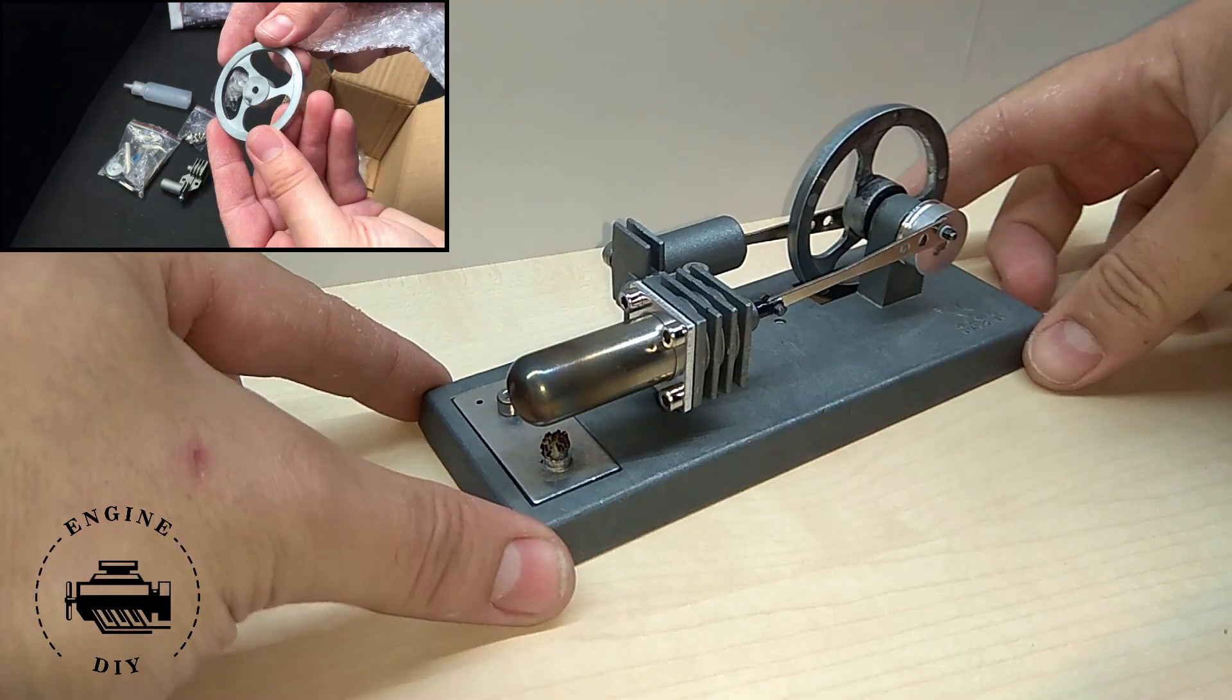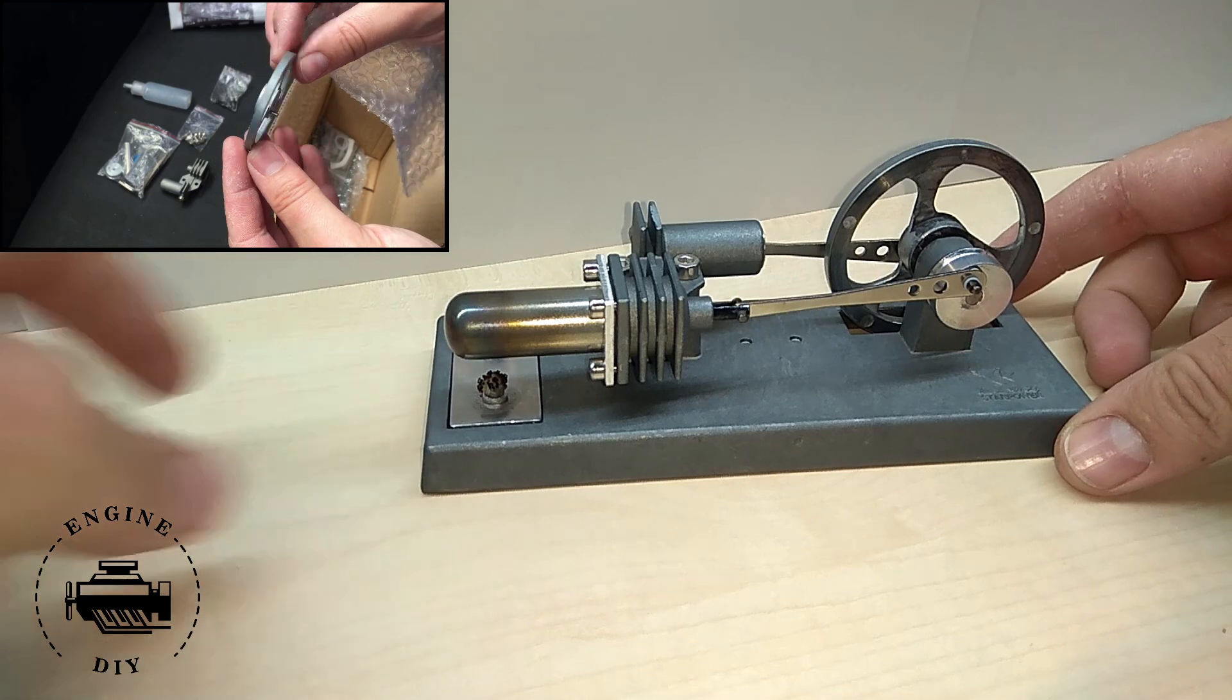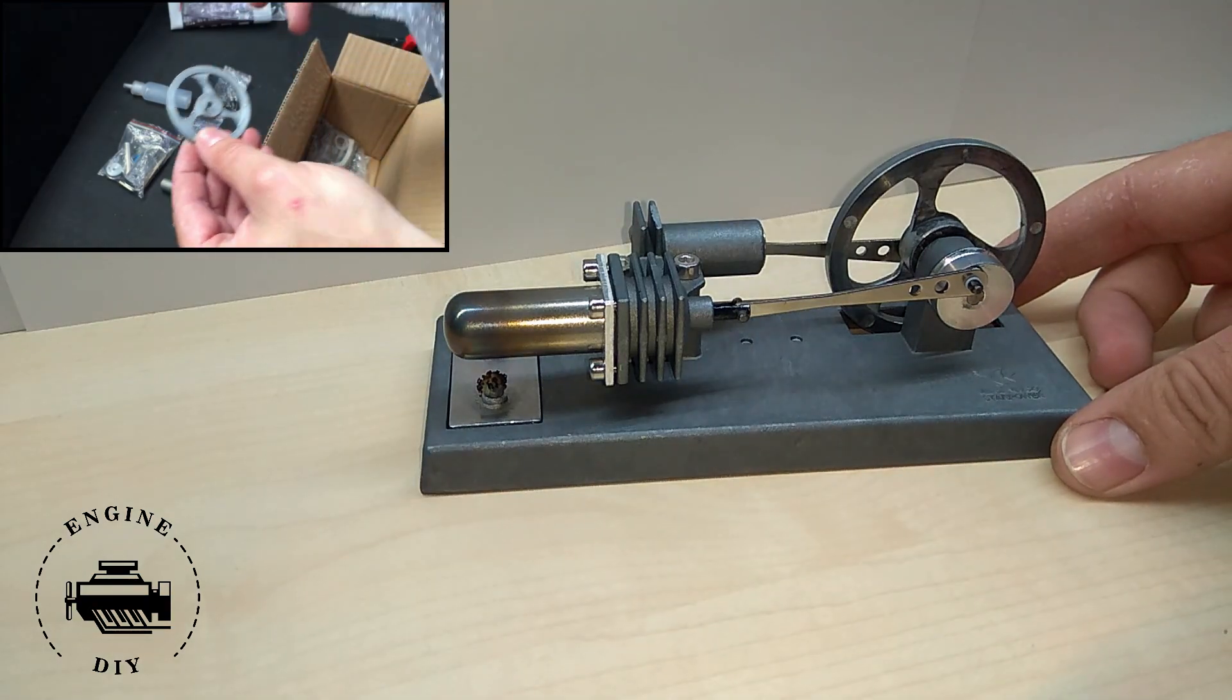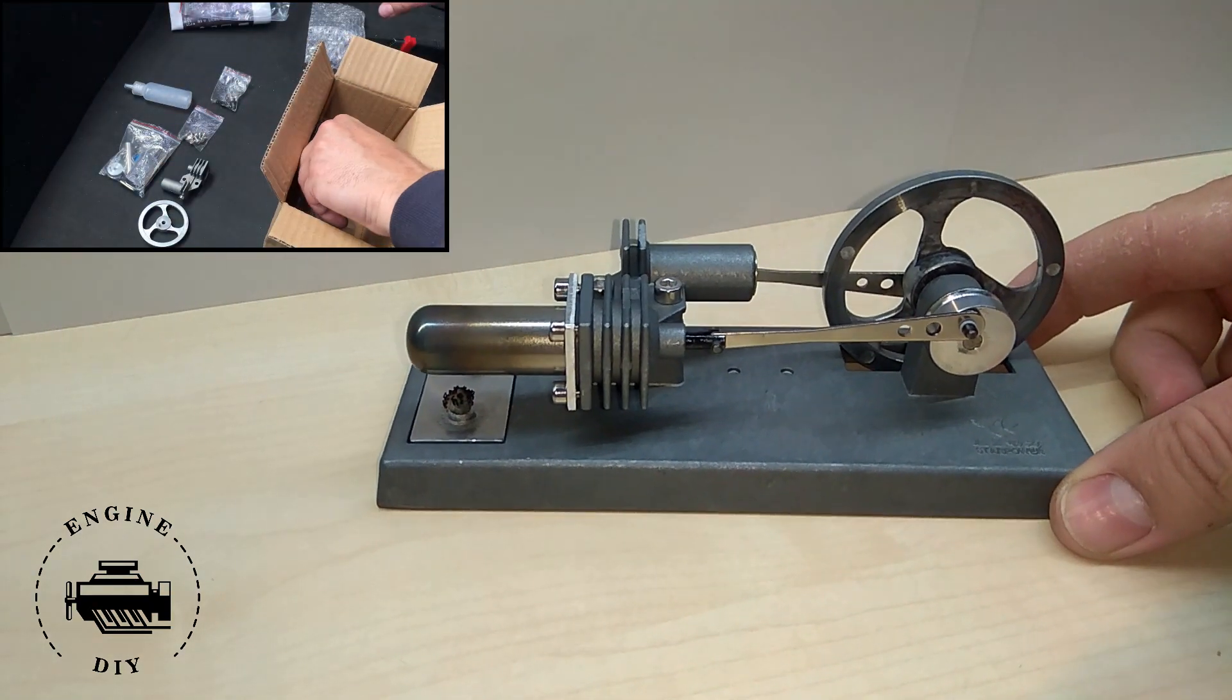This is a gamma-type sterling engine with two separated cylinders. One for the displacer, another one for the power piston.